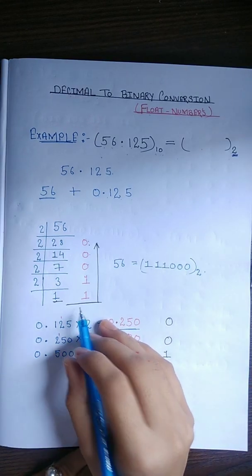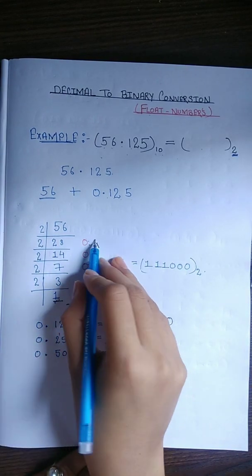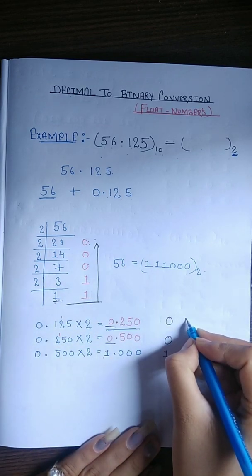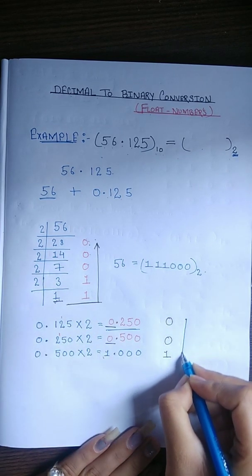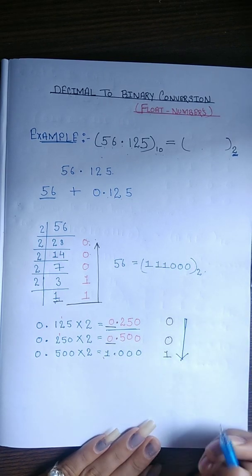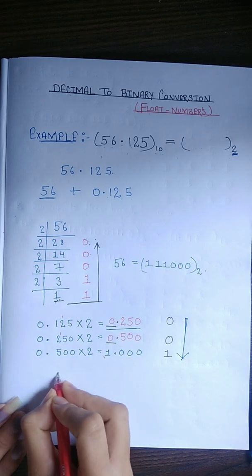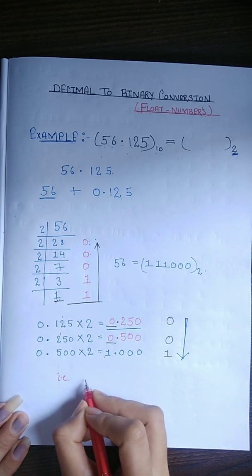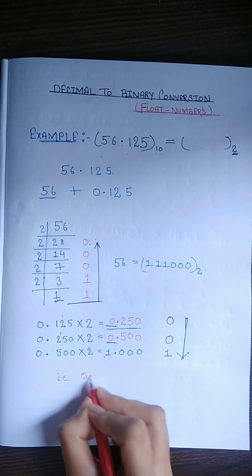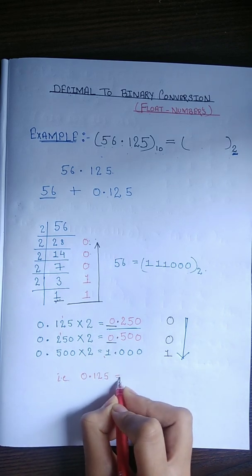For the fractional part, we write the carries from top to bottom — in the same order. So the value of 0.125 in binary is 0.001.